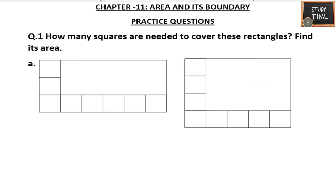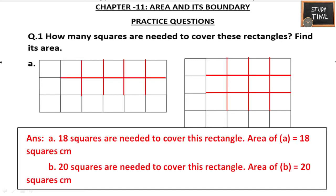How many squares are needed to cover these rectangles? Find their area. For rectangle A, 18 squares are needed, so the area of A is 18 square meters. For rectangle B, 20 squares are needed — 5, 5, 5, 5 — so the area of B is 20 square meters.